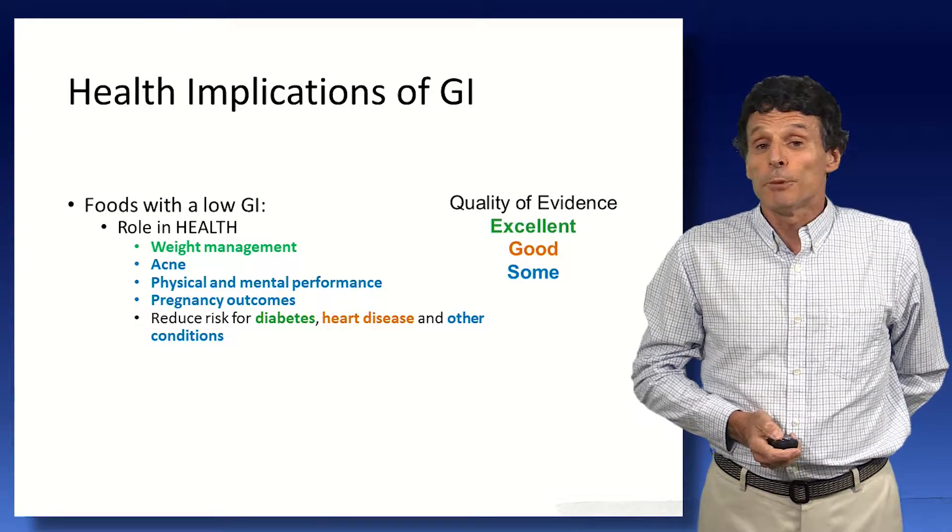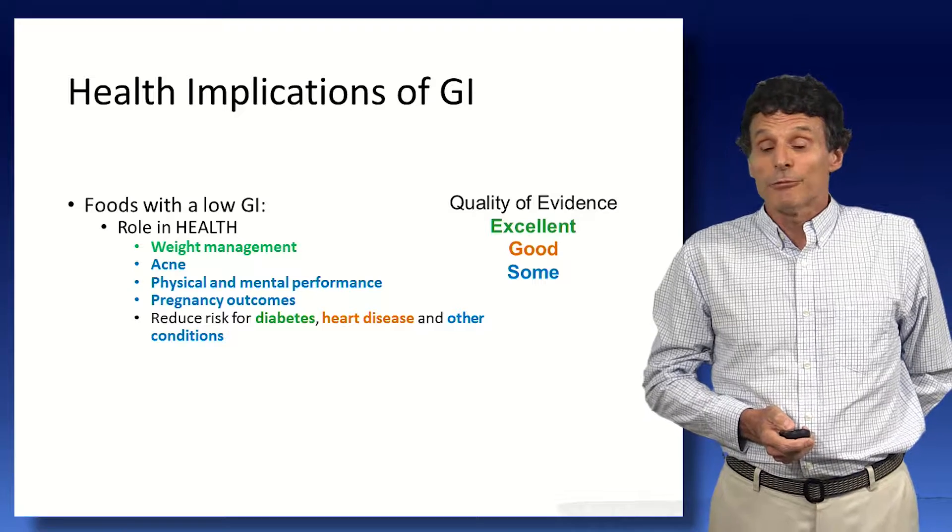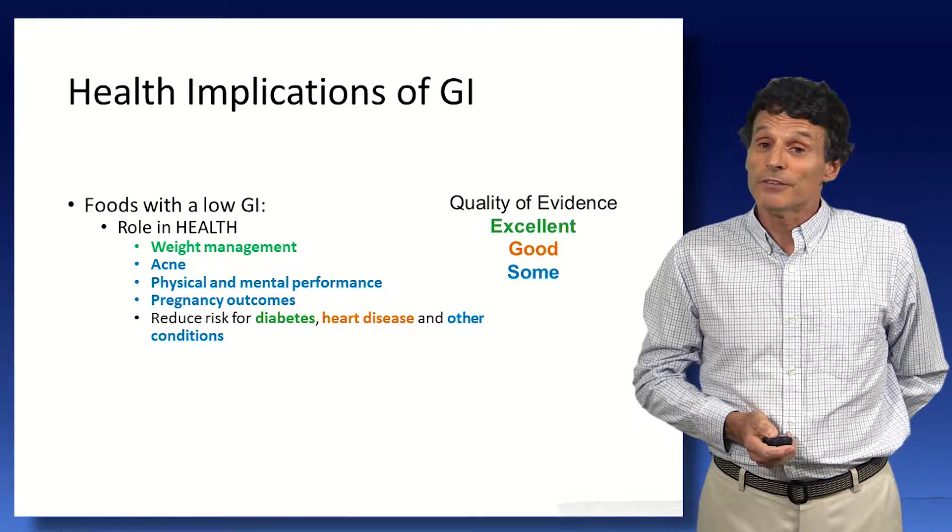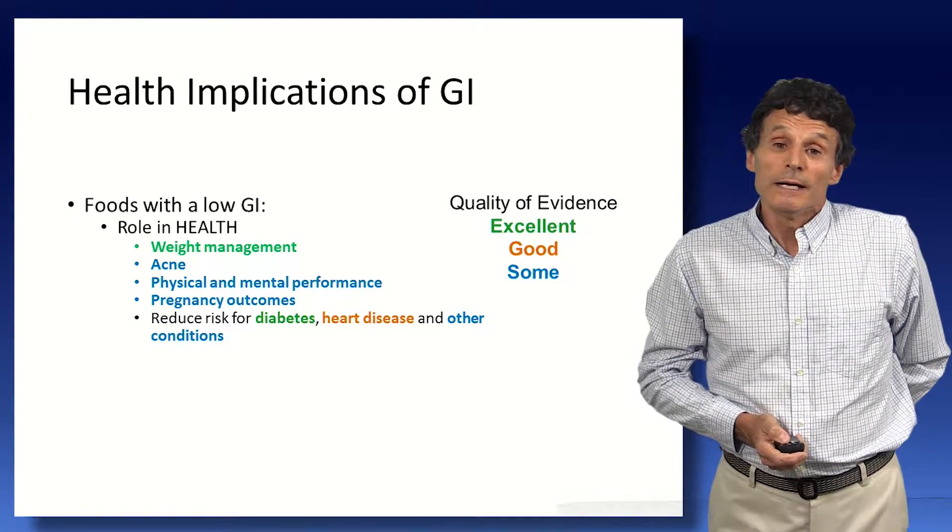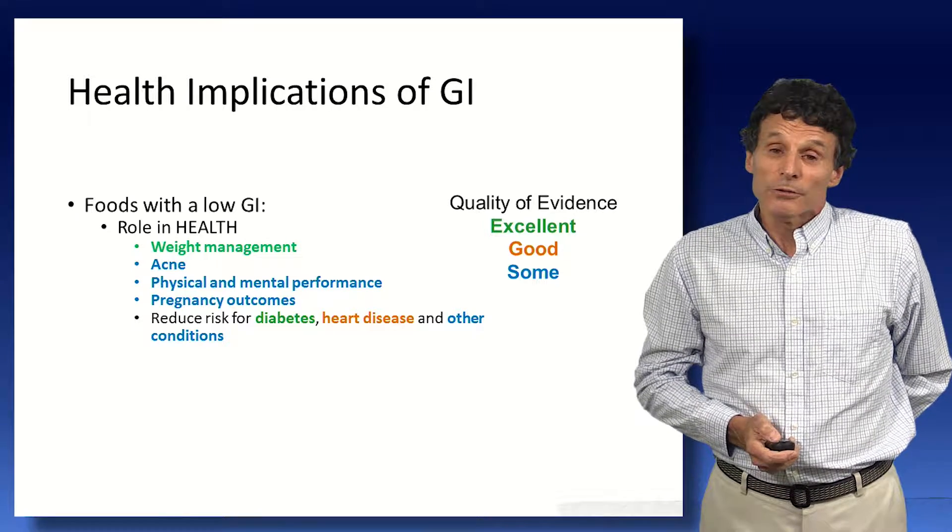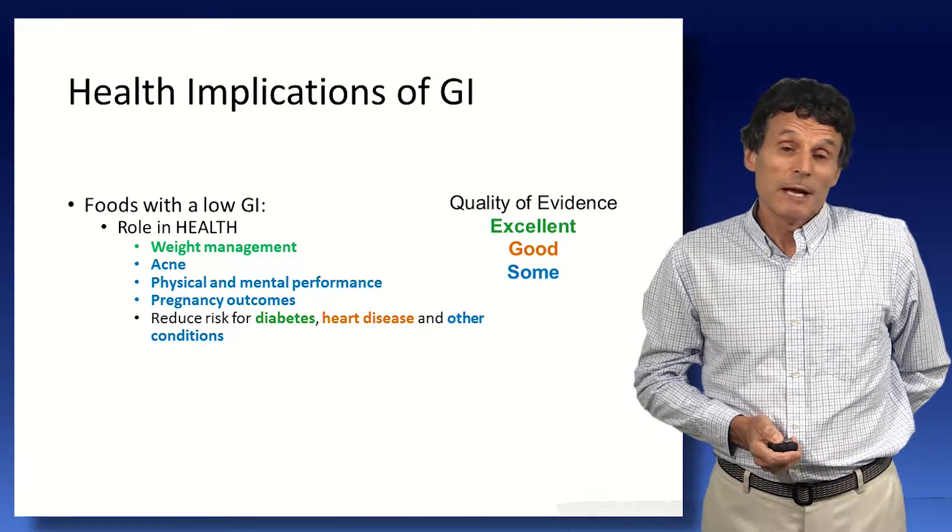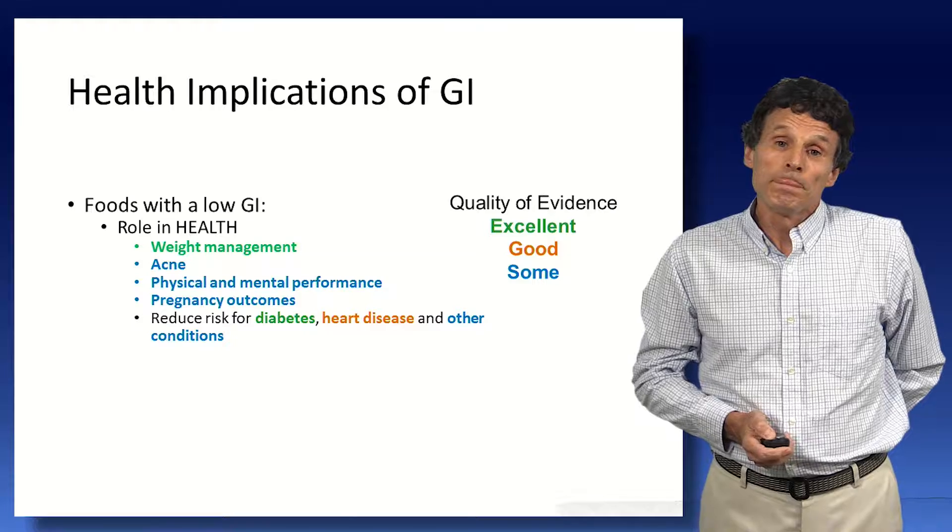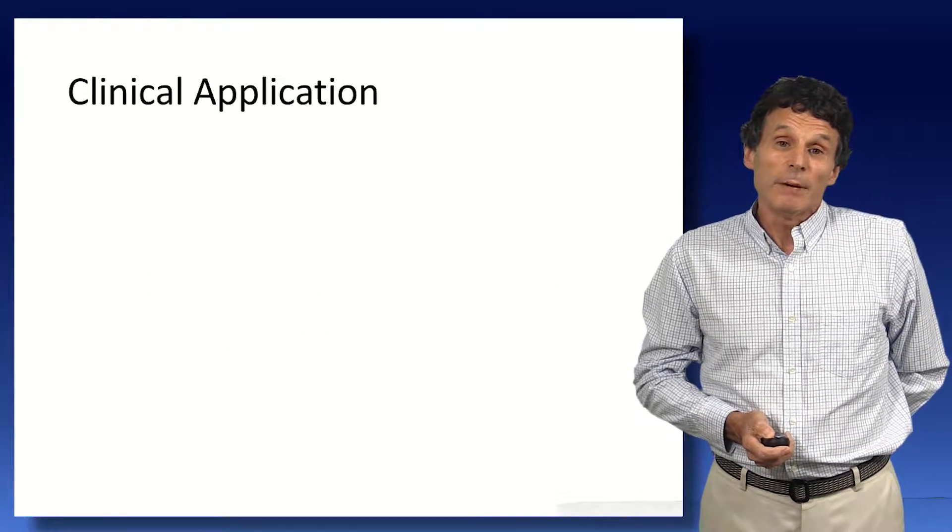There's also evidence from prospective studies, not only for reduced risk of diabetes, but also for heart disease, for inflammatory diseases, macular degeneration, cancer, and a number of other conditions as well. So this is relevant to everybody.